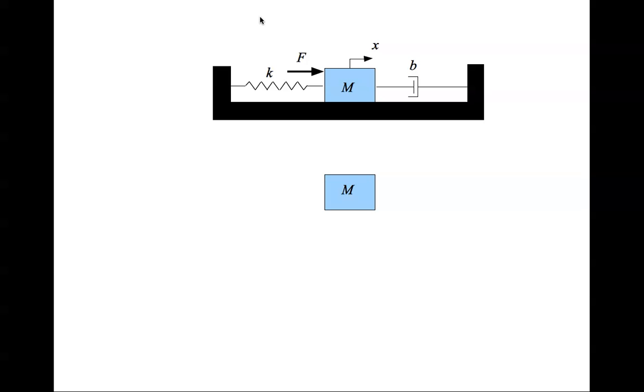Here you have the mass and the driving force which is pointing in the positive x direction, therefore it is positive. The damper resists the motion of the mass, therefore it exerts a force Fb in the negative x direction, therefore it is negative.